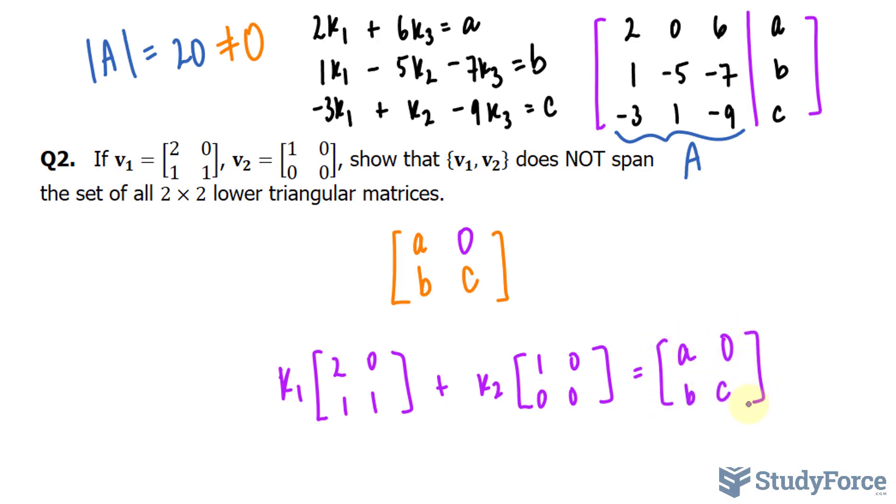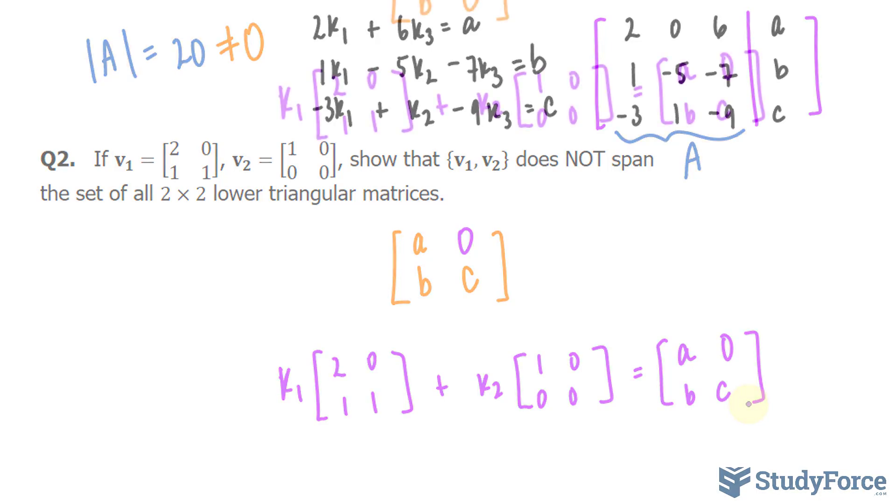One thing to be mindful of before we continue this is that a 2 by 2 lower triangular matrix in the form that we've shown needs at least 3 vectors in order to span. So right away we know, right from the get-go, that it will be inconsistent, but I will show you the steps that we used in the previous example to show it as well, to show that it doesn't span.